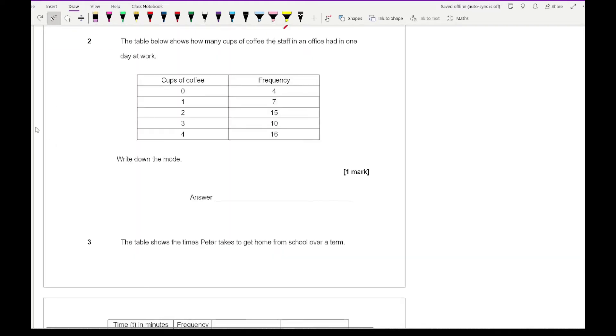Moving on to question two, it says the table below shows how many cups of coffee the staff in an office had in one day at work. It says write down the mode. The mode is the one that is the most popular. So you can see here the most popular number of cups of coffee consumed is going to be four. Remember that it's not 16, it's not the highest frequency, it's what group it refers to.